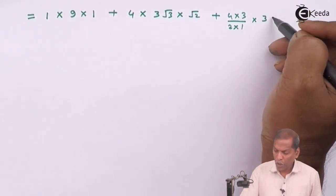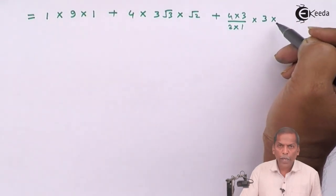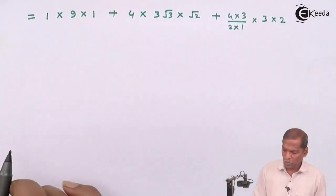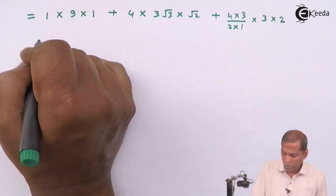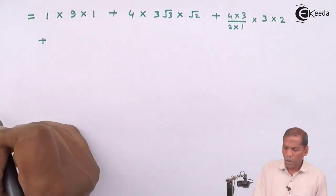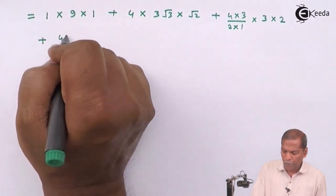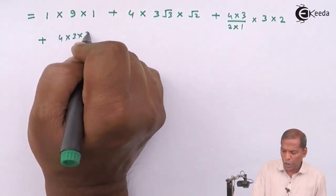Into now root 3 square that uses 3 into root 2 square that uses 2.